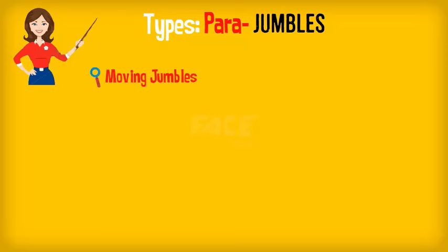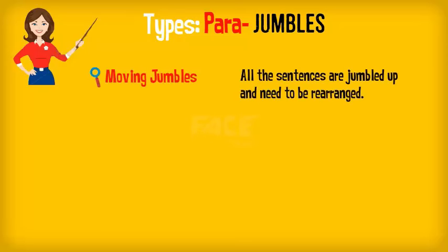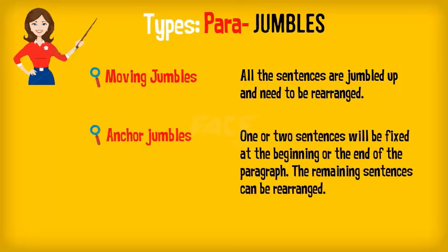Type 1: Moving jumbles. Here, all the sentences are jumbled up and have to be rearranged. Type 2: Anchor jumbles. Here, one or two sentences will be fixed at the beginning or at the end of the paragraph. The remaining sentences have to be moved around.